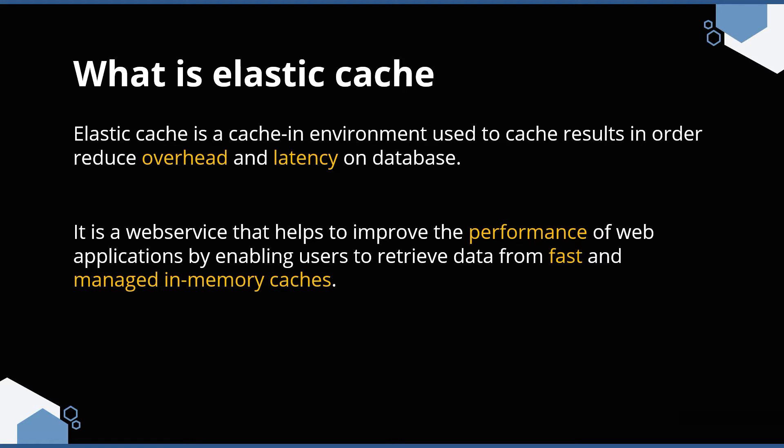Why do we do this? We do this to improve the performance. Retrieving content from the RAM is much faster compared to retrieving it from the disk database. This is fundamentally why we use cache memory in most web applications. ElastiCache is one such offering by AWS — it is the web service that helps you improve the performance of web applications by enabling users to retrieve data from fast and managed in-memory caches.